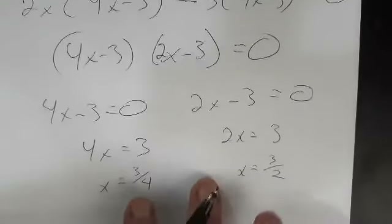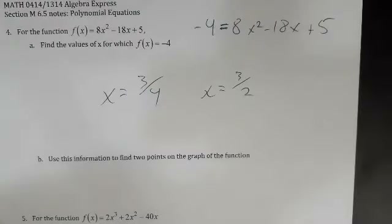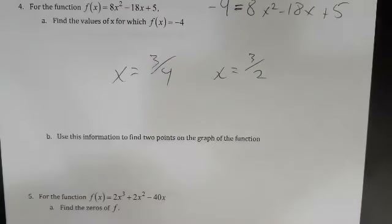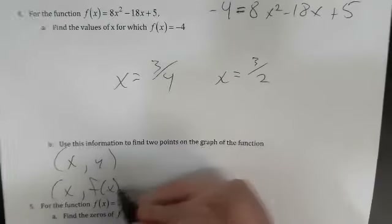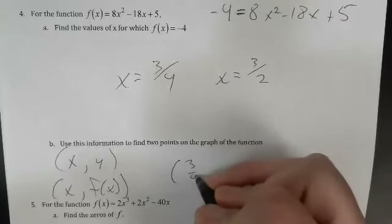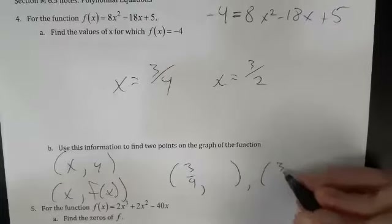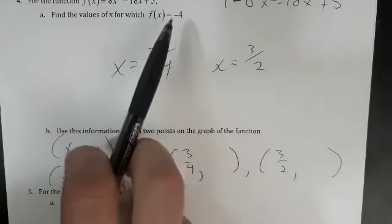Step two is done — fully factored. Step three is the zero product rule. Either 4x minus 3 equals zero, giving 4x equals 3 so x equals three-fourths, or 2x minus 3 equals zero, giving 2x equals 3 so x equals three-halves. So x equals three-quarters and x equals three-halves. Now use this information to find two points on the graph. Points look like (x, y) or (x, f(x)). We have two x values, and the corresponding y value is minus four — the value given to us originally.